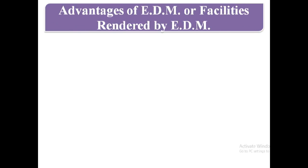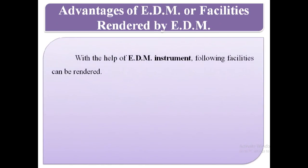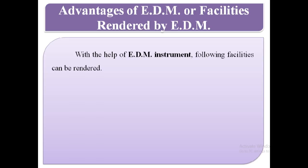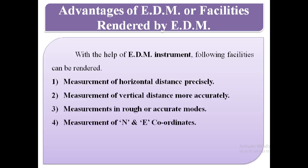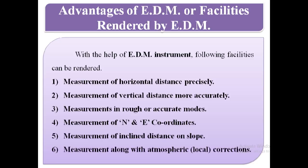Advantages of EDM or facilities rendered by EDM: With the help of an EDM instrument, the following facilities can be rendered — measurement of horizontal distance precisely, measurement of vertical distance more accurately, measurements in rough or accurate modes, measurement of north and east coordinates, measurement of inclined distance on slope, and measurement along with atmospheric or local corrections.